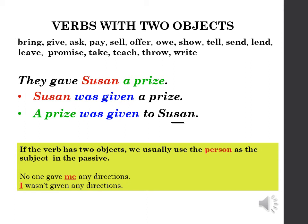Some verbs that have two objects can make two different passive sentences. Verbs like bring, give, ask, pay, sell, offer, show, tell, send, lend, leave, promise, take, teach, throw, write, etc. For example: 'They gave Susan a prize' → 'Susan was given a prize' or 'A prize was given to Susan.' If the verb has two objects, we usually use the person as the subject in the passive. For example: 'No one gave me any directions' → 'I wasn't given any directions.'